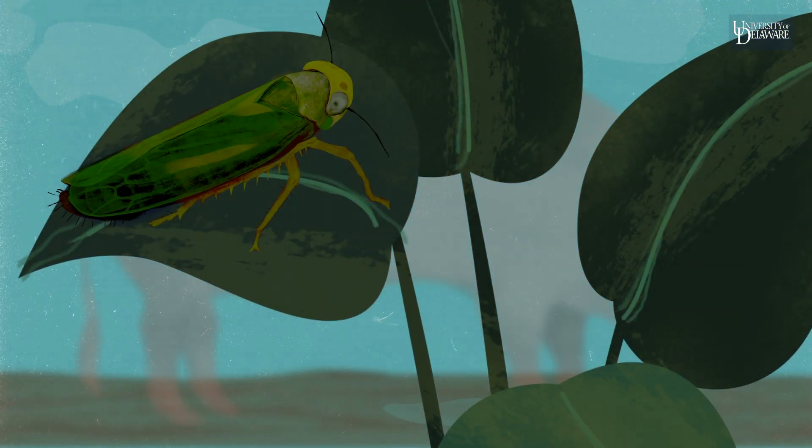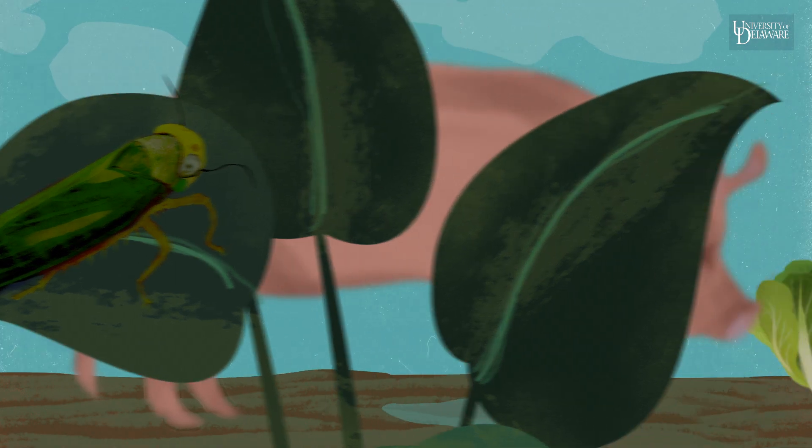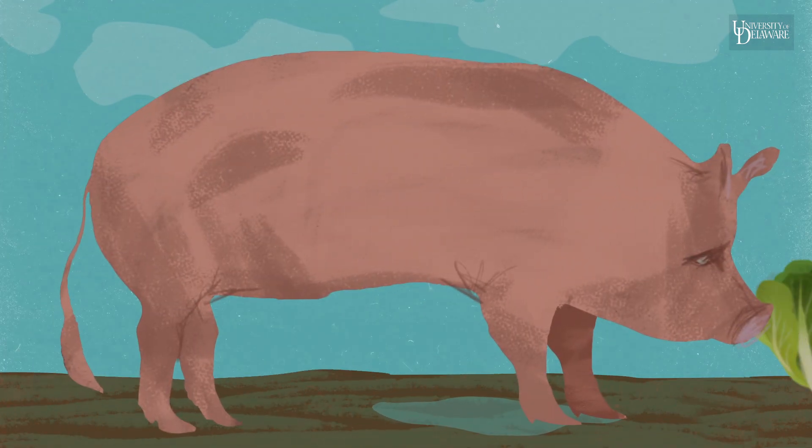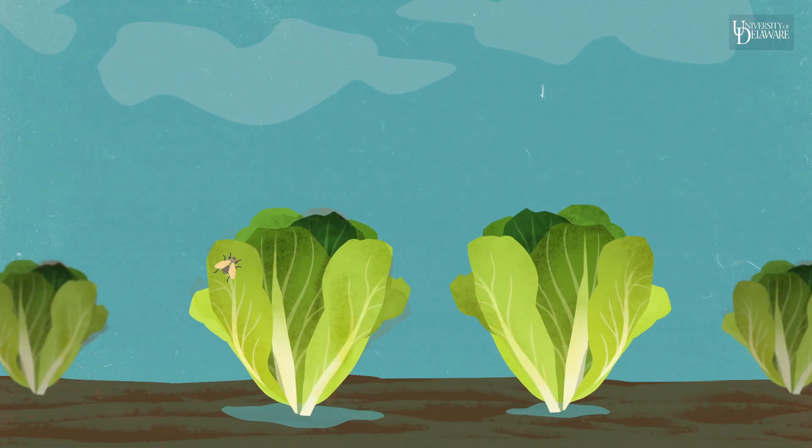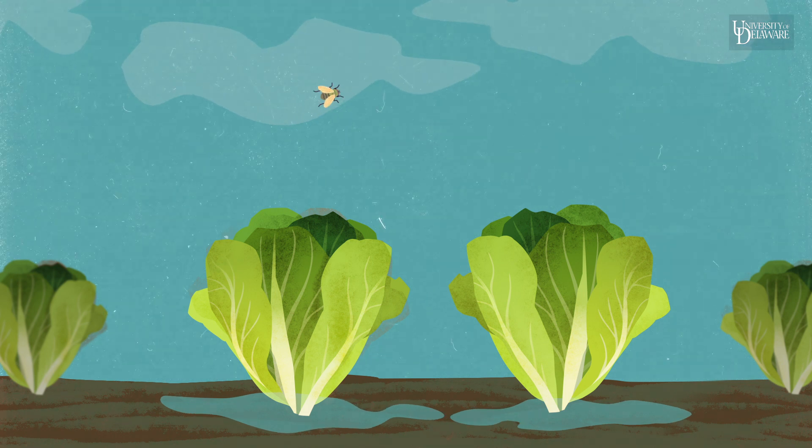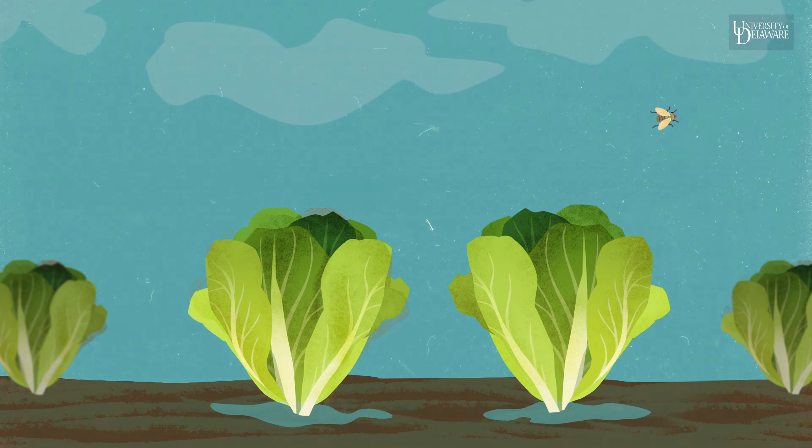The bacteria can get onto and into plants by piggybacking on insects, animals, soils, and irrigation methods. They also get into plants through root damage and tiny openings on leaf surfaces called stomates.